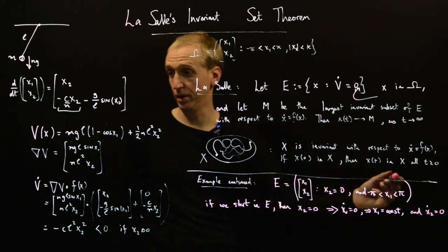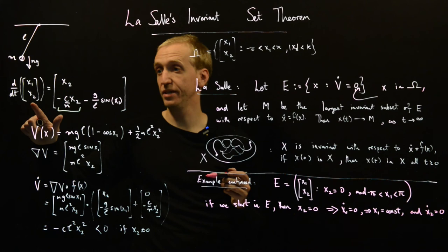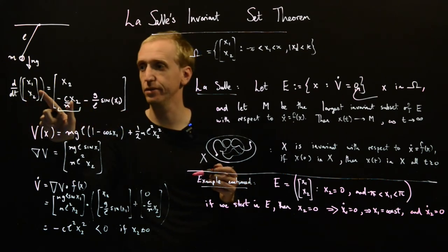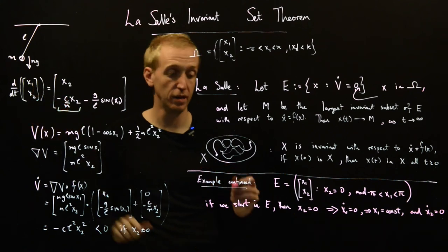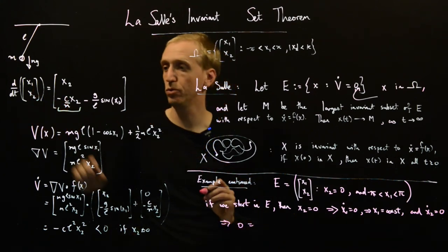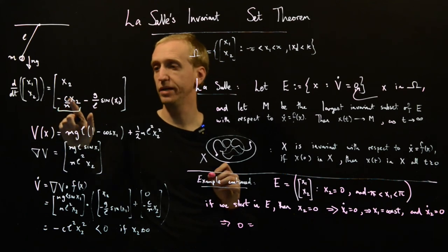So what do these things imply? Well, if this is equal to zero, now let's just look at the second equation here. So it says that x2 dot, which is equal to zero, is equal to minus C over M x2.